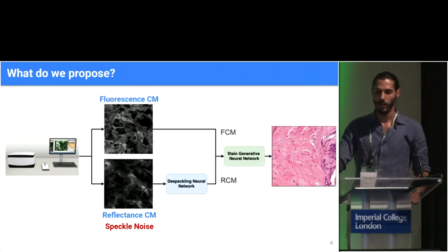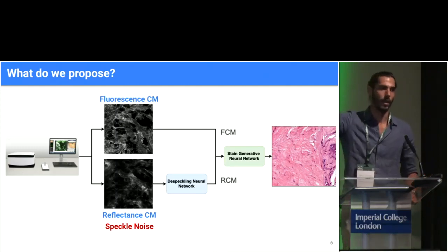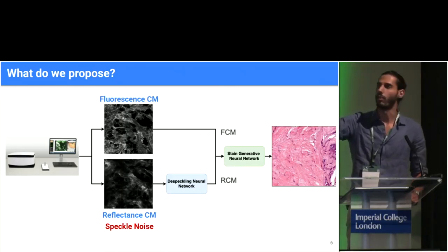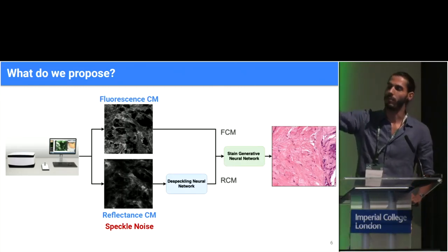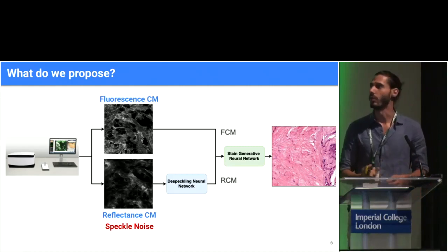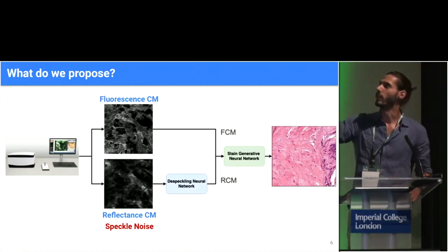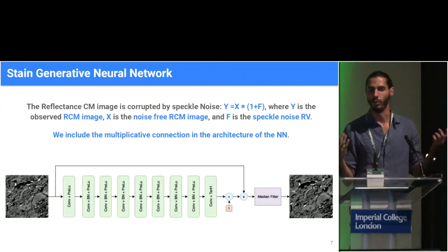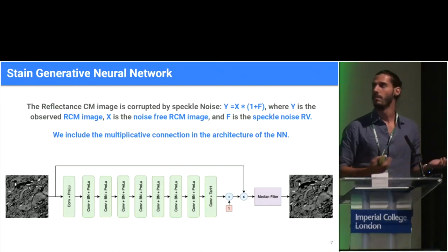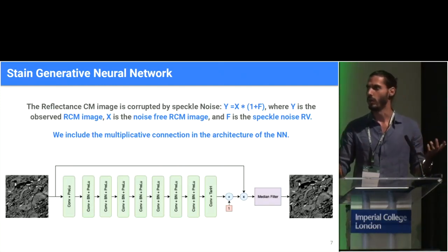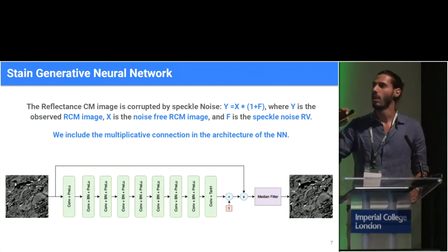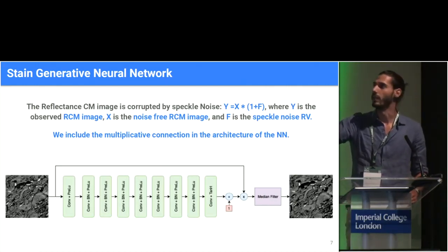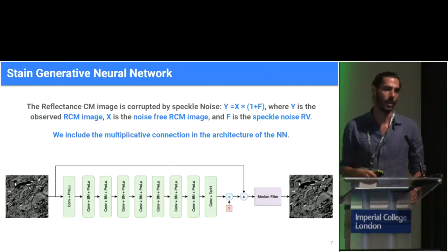Basically, what we have is two neural networks. The first one takes care of the speckle noise that is present on the reflectance mode of the confocal microscope. Speckle noise is a kind of noise which is multiplicative to the input signal. We train a fully convolutional neural network with skip multiplicative connections so that the network can learn the inverse of the speckle noise and produce a clean image at its output.